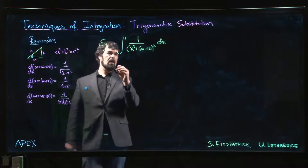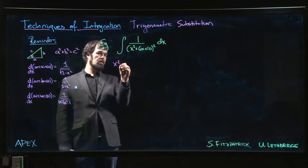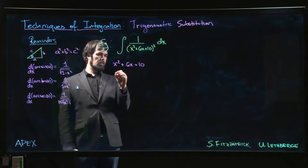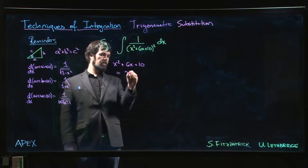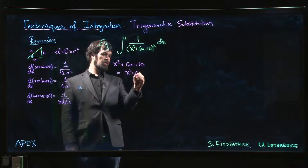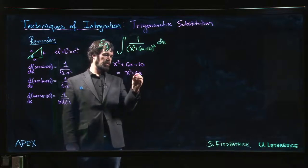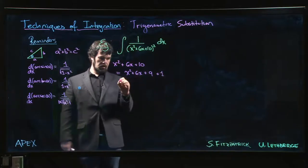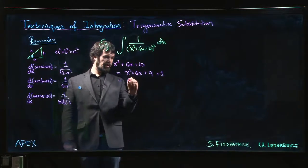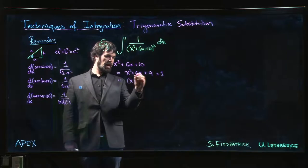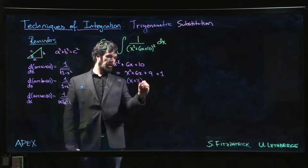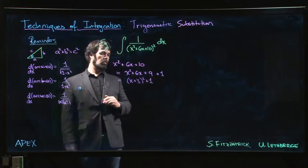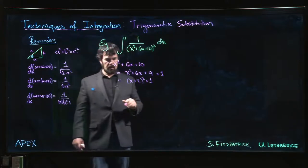So x squared plus 6x plus 10 - that is x squared plus 6x plus 9 plus 1. I'm doing that because x squared plus 6x plus 9, half of 6 squared is how I got there, gives me x plus 3 all squared plus 1.